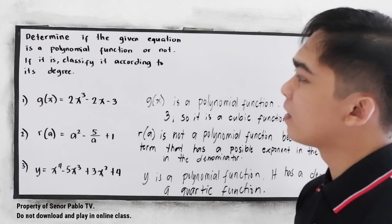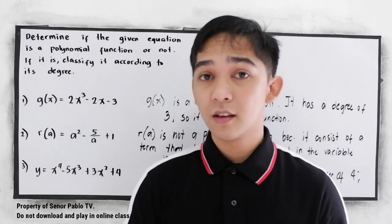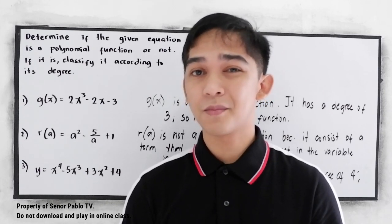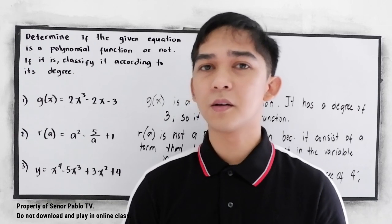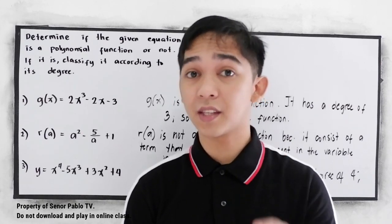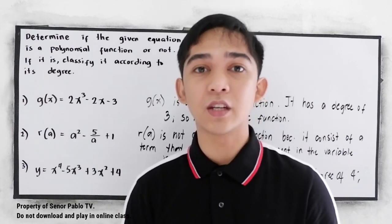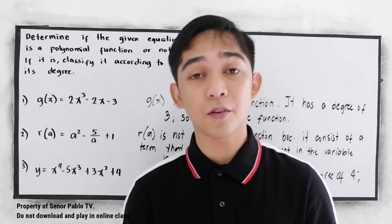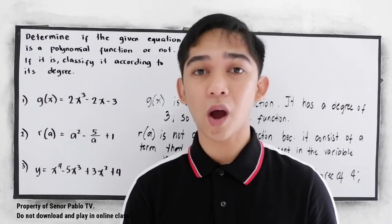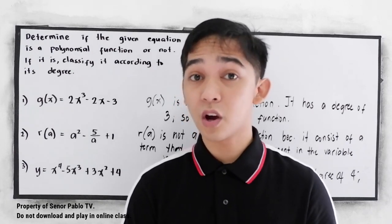In determining whether the given function is a polynomial or not, always check the restrictions first. Our restriction is there must be no term that has a variable with a positive exponent in the denominator. That's how to check or determine whether the given function is a polynomial function or not — always check the restrictions first. Thank you for watching Senior Pablo TV. See you in our next lesson: zeros of polynomial functions.